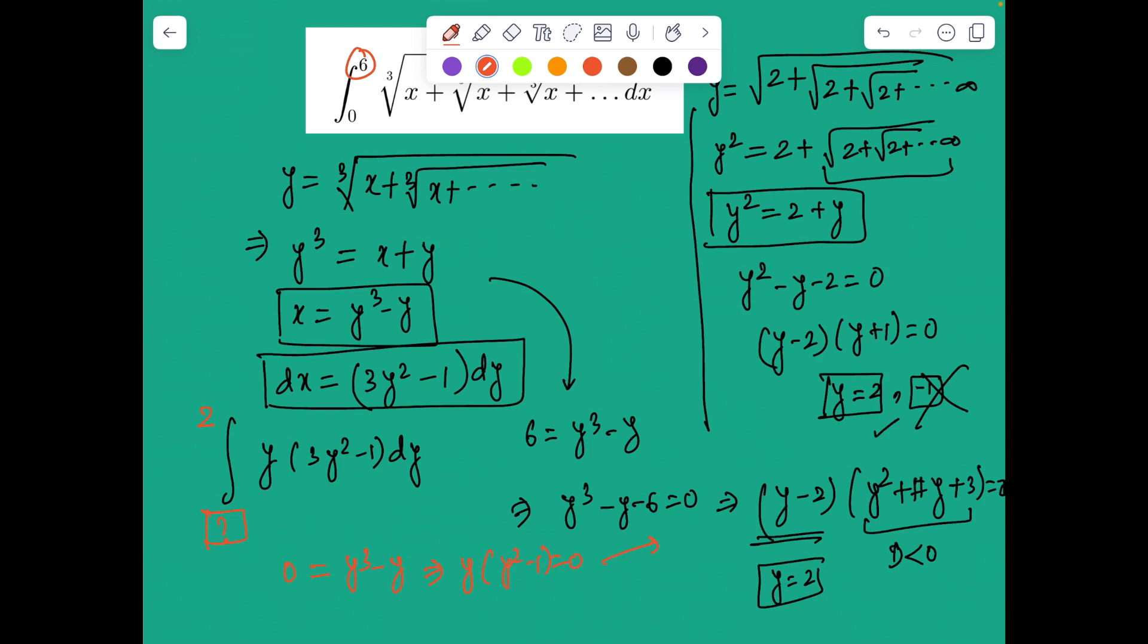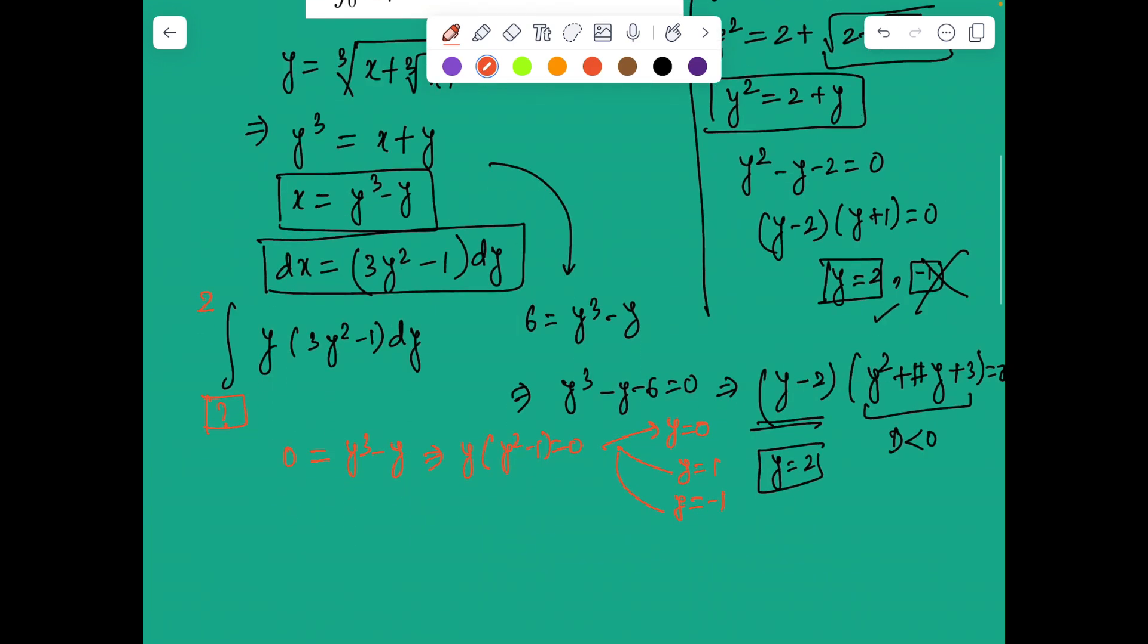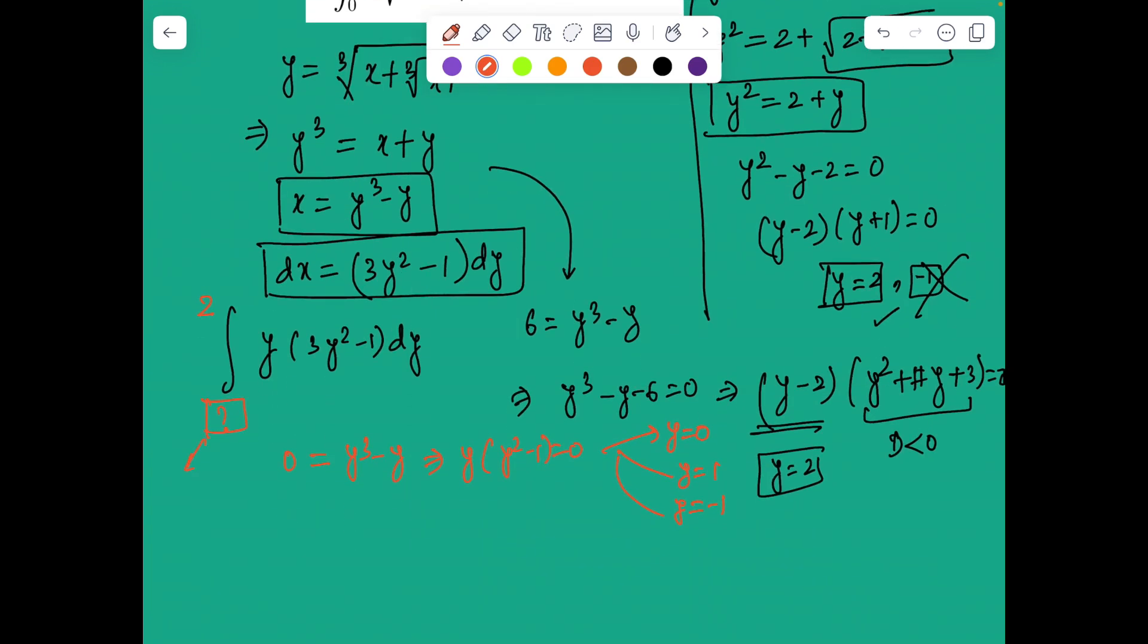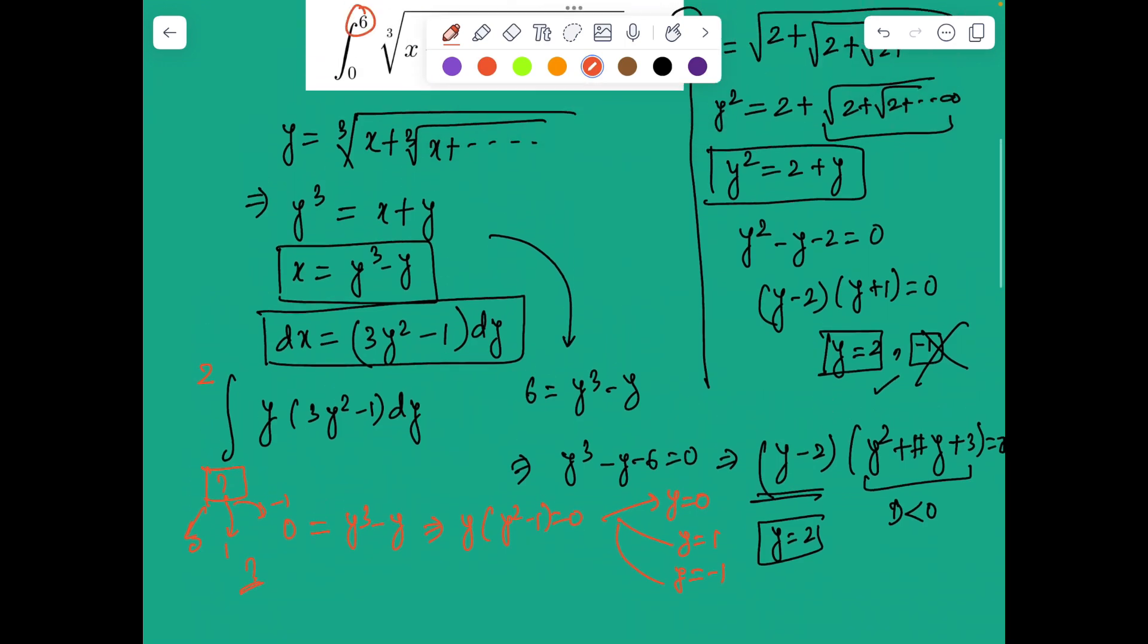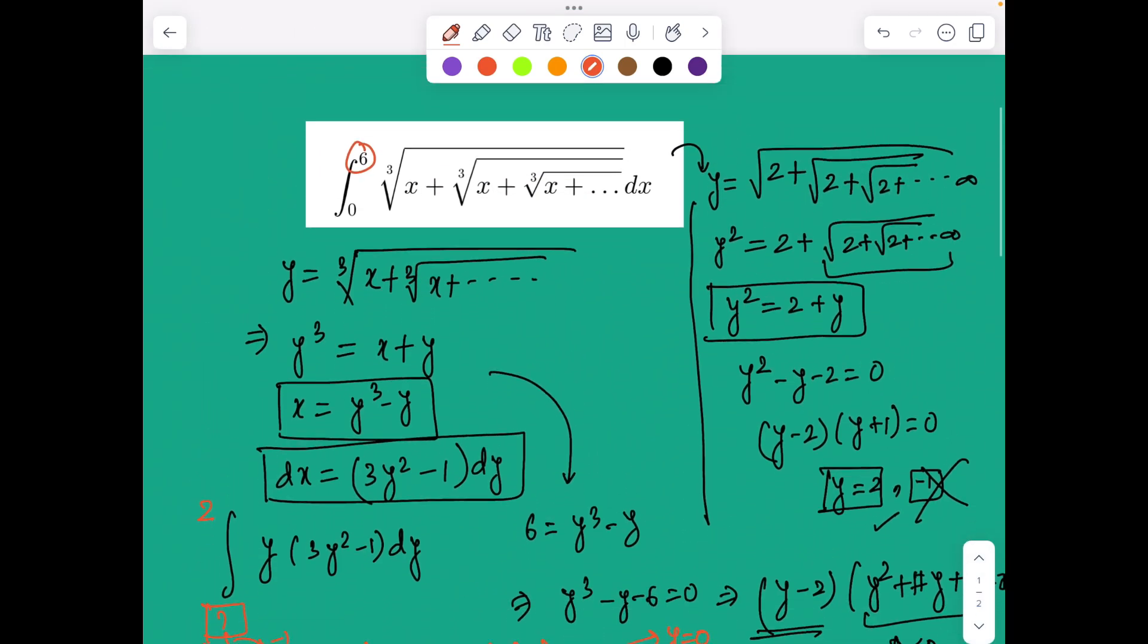If I just put the value of x at 0, I'm going to get y cubed minus y, which will make y times y squared minus 1 equal 0. Hence we have three solutions: either y equals 0, y equals 1, or y equals minus 1. Now the issue is what to take. Whether should I keep 0 over here or 1 over here or minus 1 over here.